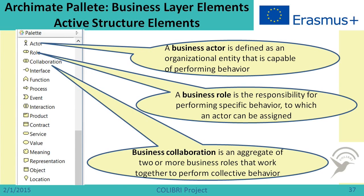The Archimate language prescribes three types of elements: active elements that do something, functional/behavioral elements which show that something happens, and passive elements which are the objects over which specific actions are taken. Starting with business layer active structure elements, we can see actors which represent specific individuals, units, or departments; roles which mainly show the responsibilities of actors; and collaborations which show activities that can only be performed by several roles cooperating.